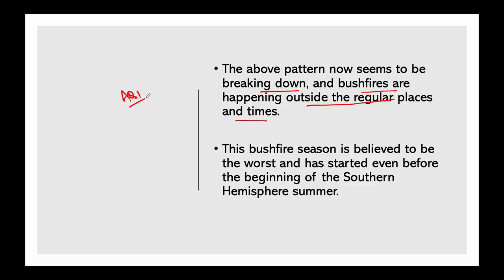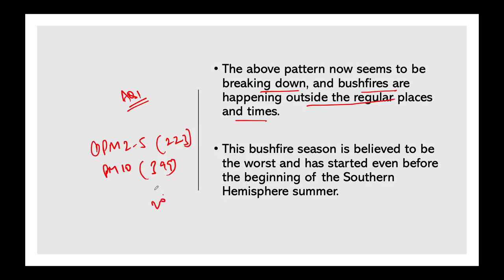Furthermore, these bushfires are also affecting air quality. Looking at the readings of Particulate Matter 2.5, the readings are 223, and Particulate Matter 10 readings are 399, which fall in the hazardous category — that means readings above 200. We are all aware of air quality index because of the Delhi pollution, which has even crossed 600 to 700 on certain days.